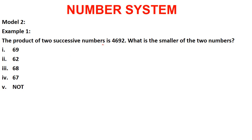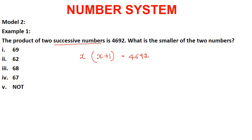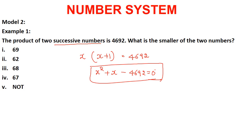Let's look at the second example. The product of 2 successive numbers is 4692. What is the smaller of the 2 numbers? It is talking about successive numbers — not even or odd — so if the first number is x, the next number is x+1. The product of these two is x(x+1) = 4692. Expanding: x² + x − 4692 = 0. This is a quadratic equation, which would take too much time to solve.